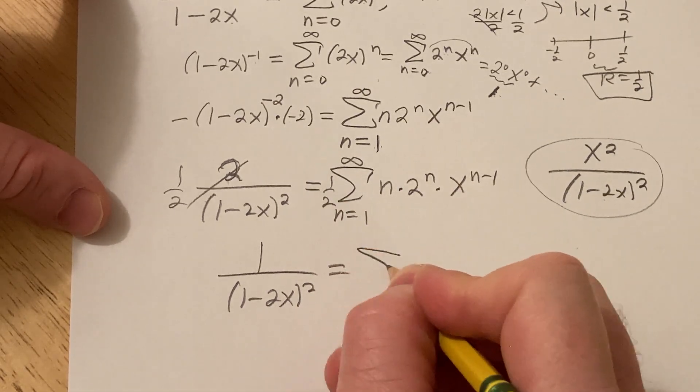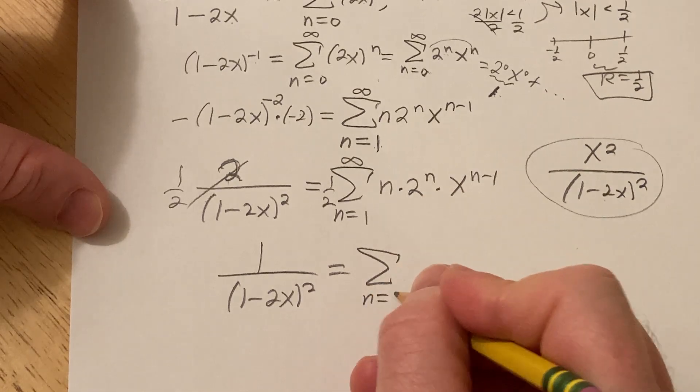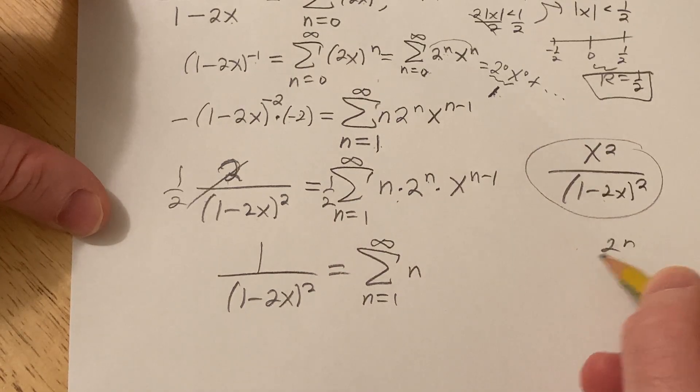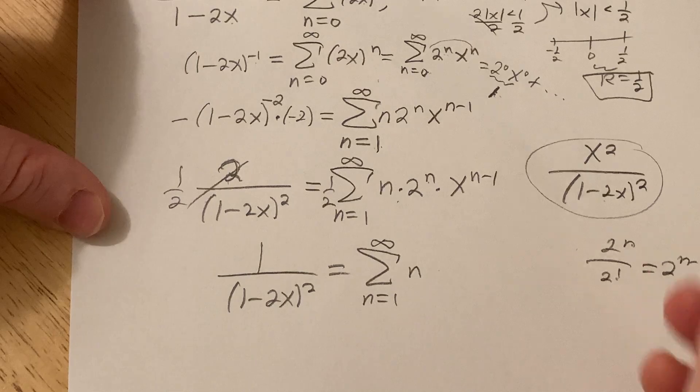Then I have 1 over 1 minus 2x squared. This 1 half can be brought into the infinite sum. Let's do that, because we're pros here. n goes from 1 to infinity, and it's going to be 2 to the n over 2, and you subtract. It's n minus 1, properties of exponents.